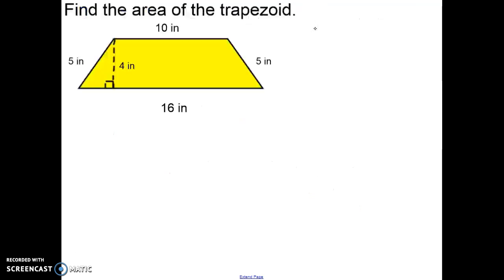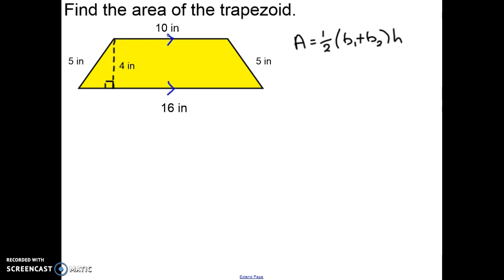Let's find the area of this trapezoid. First, we write the formula: A equals one-half times the sum of base one and base two times the height. Next, we identify the bases and the height. The two parallel sides are the top side, which is 10 inches long, and the bottom, which is 16 inches long. Those are the two bases.